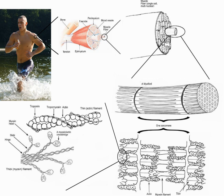Muscle strength is a result of three factors that overlap: physiological strength (muscle size, cross-sectional area, available cross-bridging, responses to training), neurological strength (how strong or weak is the signal that tells the muscle to contract), and mechanical strength (muscle's force angle on the lever, moment arm length, joint capabilities).